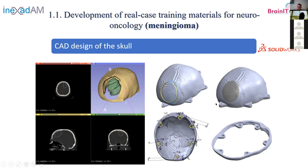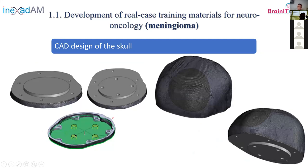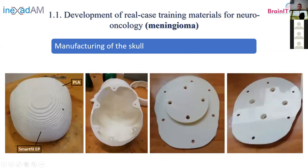We added holes for screws and other features to fix the assembly to a holder. The skull and base are screwed together, and additional holes fix the whole assembly to a holder placed on the table, allowing students to orient the skull and work on it. Here you can see the 3D printed skull and the base.